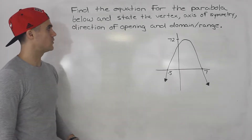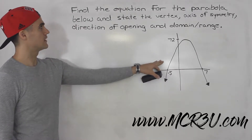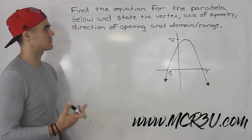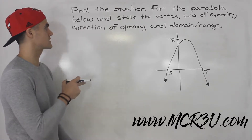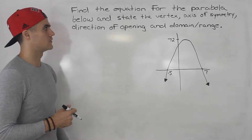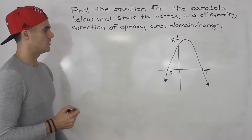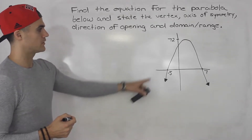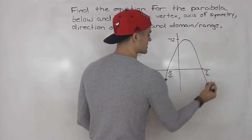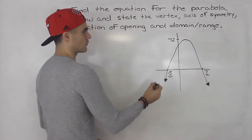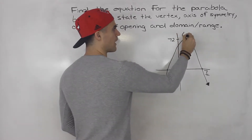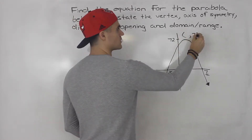Welcome back, guys. In this video, we're given this parabola here, and we have to find the equation for the parabola and state some characteristics — the vertex, axis of symmetry, direction of opening, and the domain and range. Notice in this parabola, we're given the x-intercepts negative 5 and 7, and we're also given the maximum value. So we know that the y-value of the vertex is going to be 72.